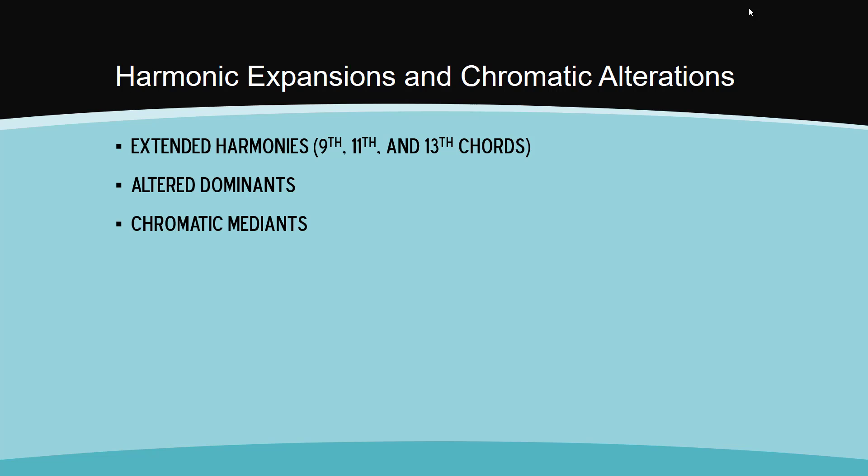These types of harmonies all developed out of dissonance which became standardized as part of the harmony. These dissonances, which originally were analyzed as diatonic or chromatic non-harmonic tones, eventually became part of the harmonic language itself. Just because extended harmonies have more pitches or chromatic alterations does not mean that their harmonic function changes. These chords still function as either tonic, predominant, or dominant, depending on the root of the chord and the root motion of the progression.